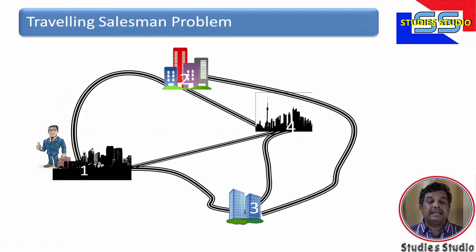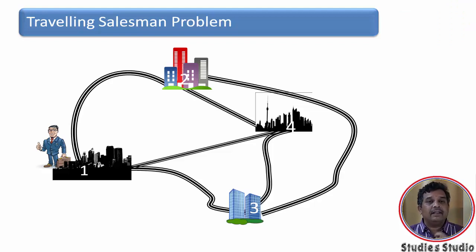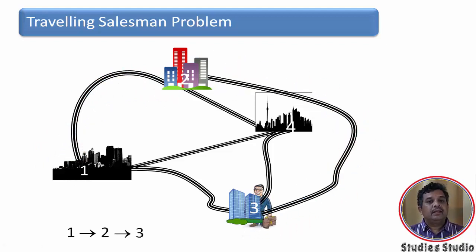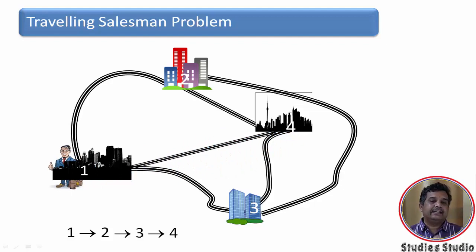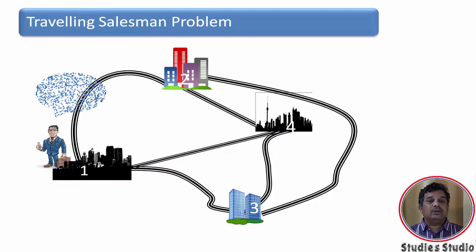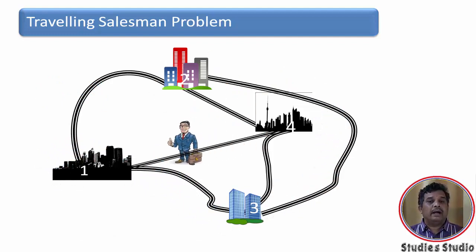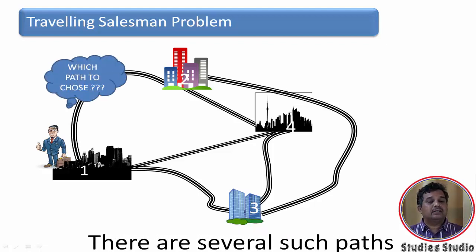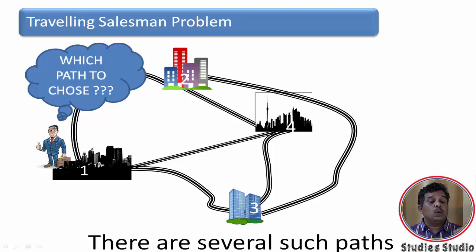As the name itself suggests, let's say there is a salesman traveling around different cities, and after visiting all the cities he has to come back to the starting point. The salesman can travel from city 1 to city 2 to city 3 to city 4 and back to city 1, or he can travel 1 to 3 to 2 to 4 to 1. There are various paths of travel.